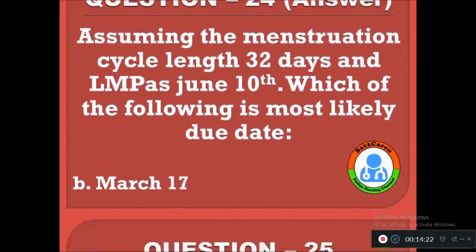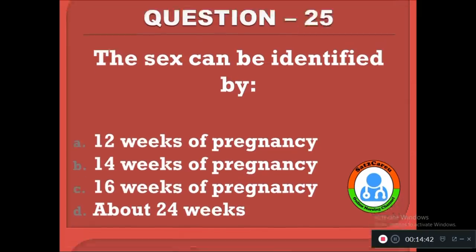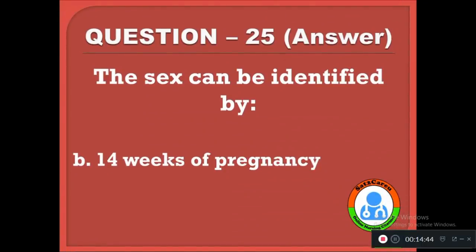Question 25: The sex of the fetus can be identified by — option A: 12 weeks of pregnancy, B: 14 weeks of pregnancy, C: 16 weeks of pregnancy, D: about 24 weeks. The correct answer is B, sex is determined at 14 weeks of pregnancy.